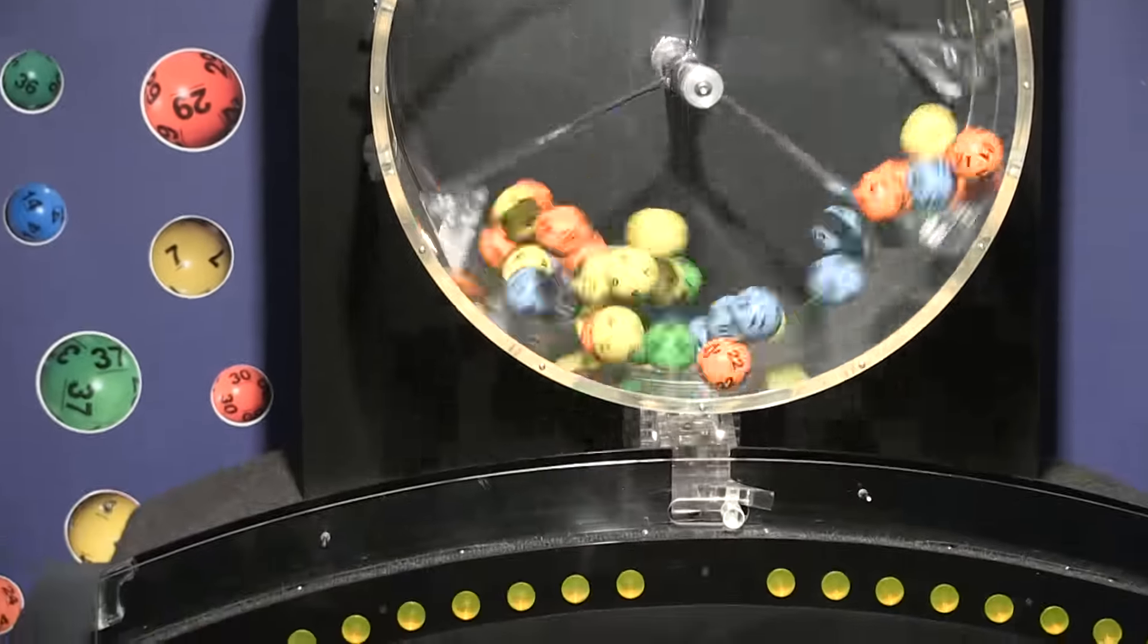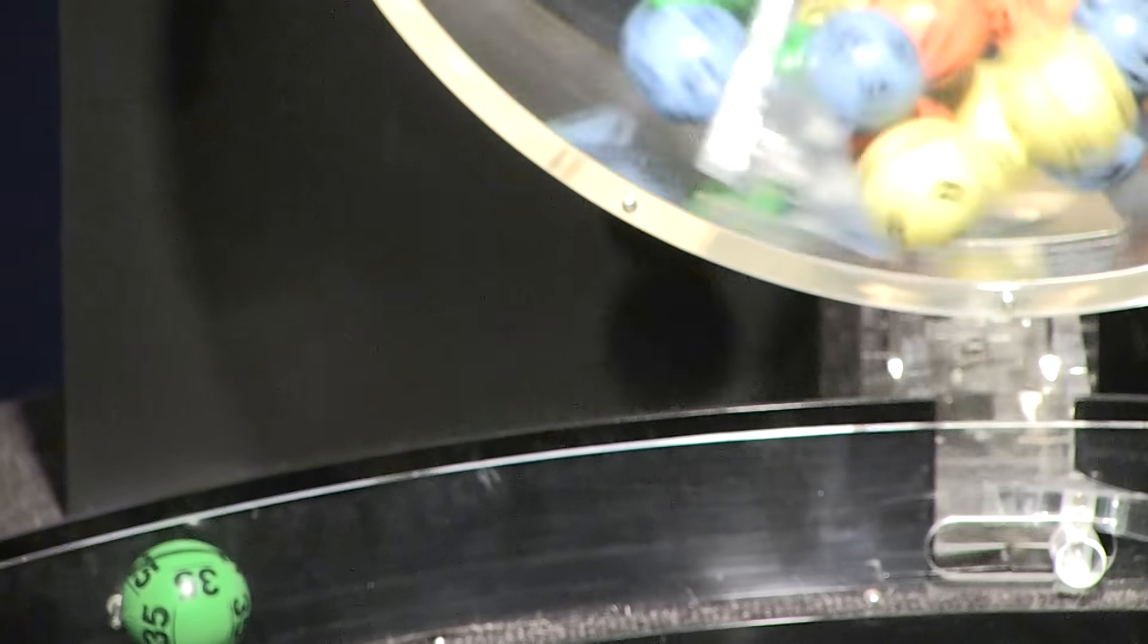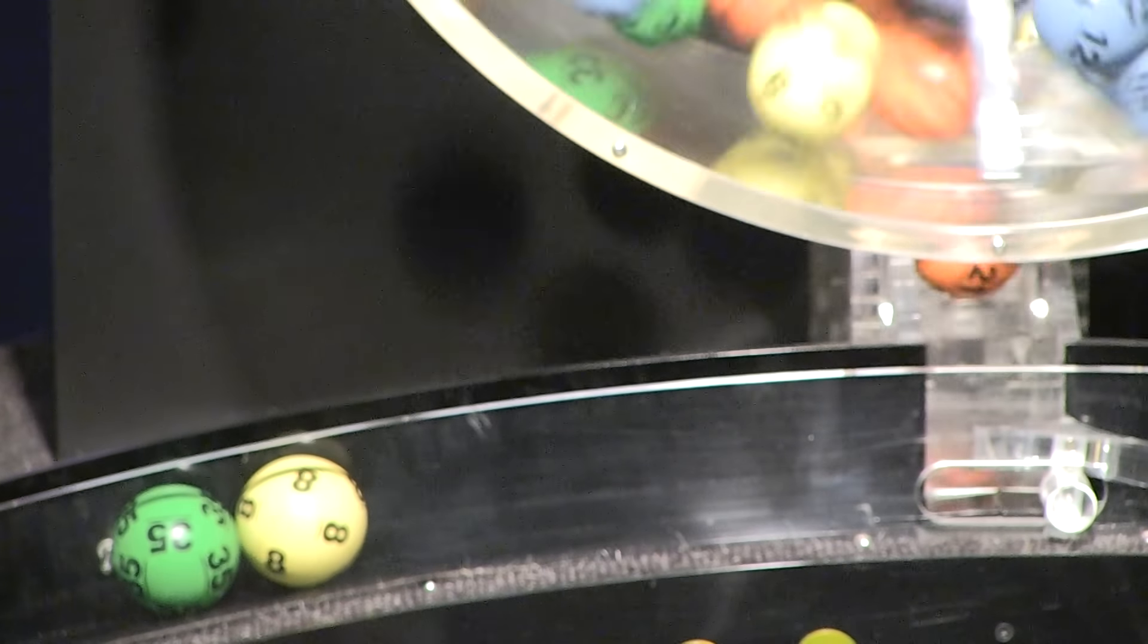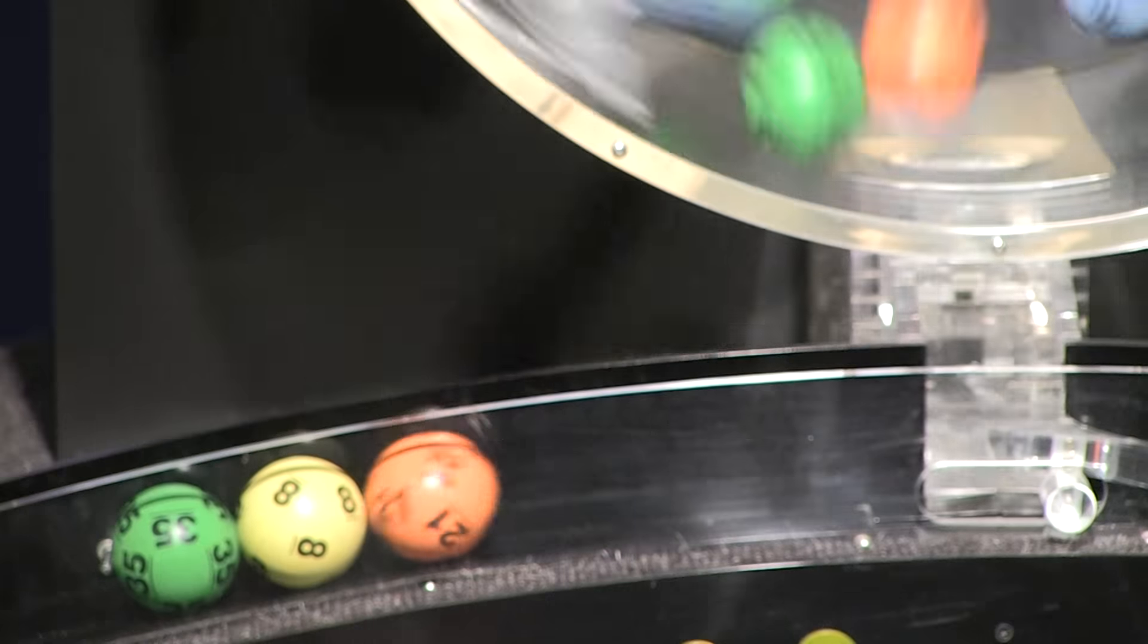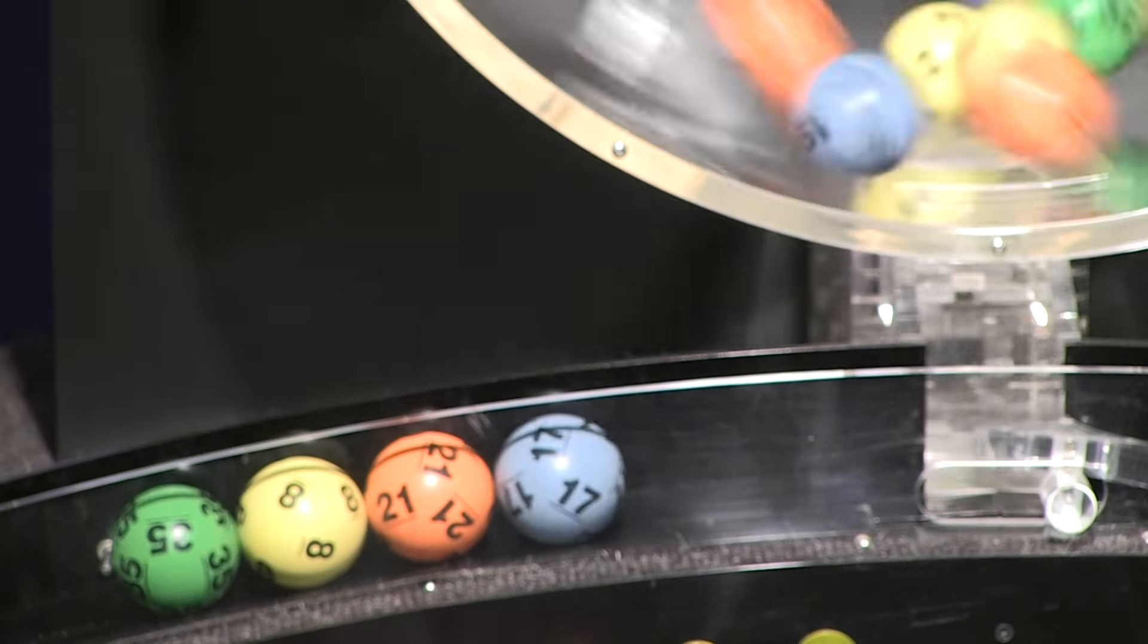And now, let's see how you did in tonight's drawing. That first number is 35. Next is 8, followed by 21. If you've matched these three numbers, you've already won a prize.